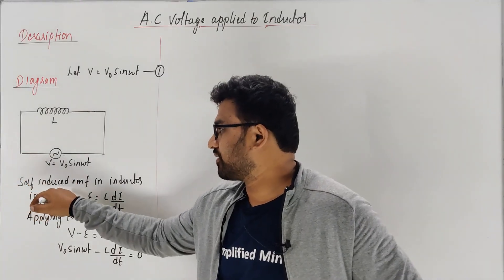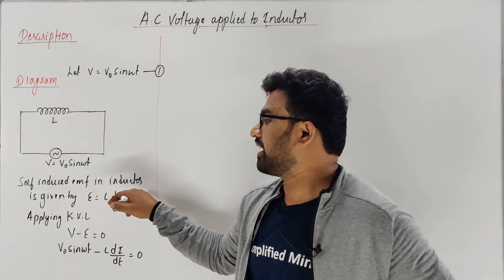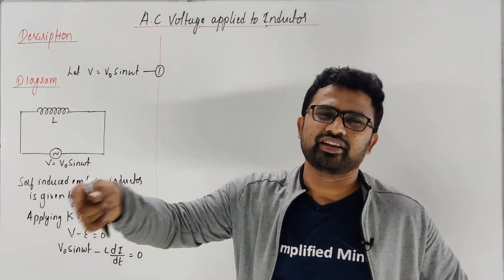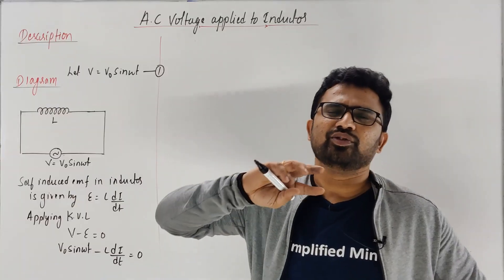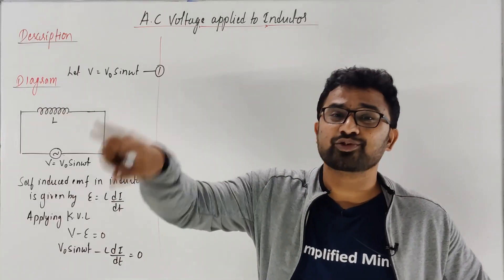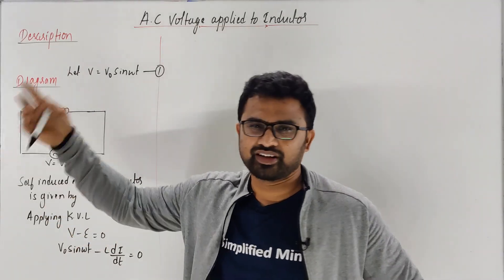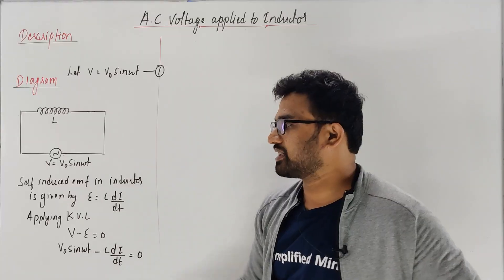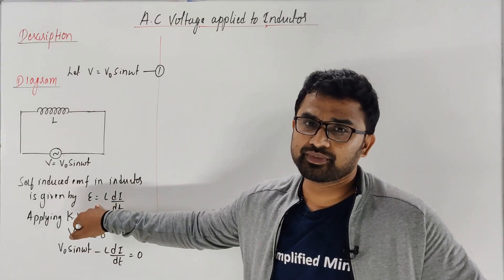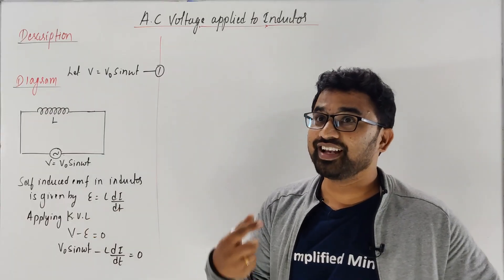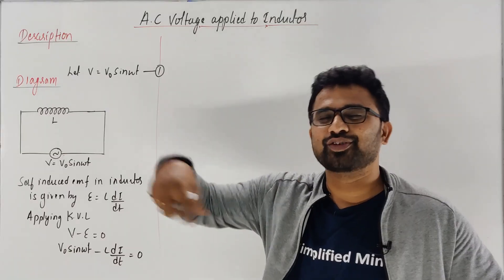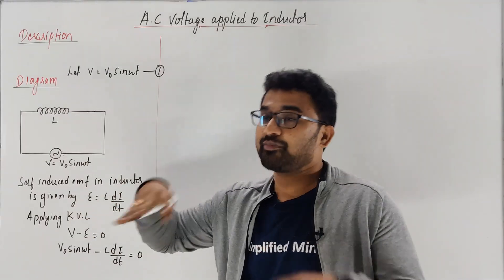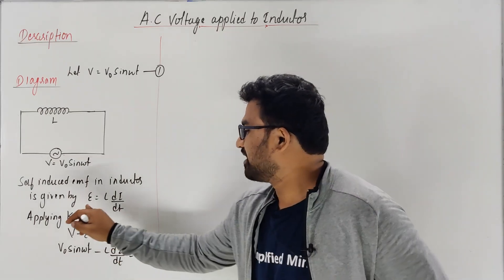The self-induced EMF in the inductor is given by E = L × dI/dt — that's from the previous chapter on self-inductance and mutual inductance. Energy stored in the inductor is (1/2)LI². So the self-induced EMF formula is E = L × dI/dt. This is the EMF induced by the inductor. There's something called back EMF — anyway, not required here. So E = L × dI/dt.